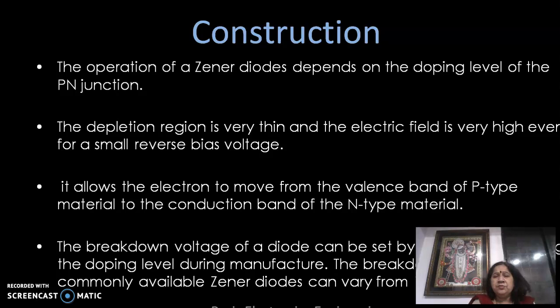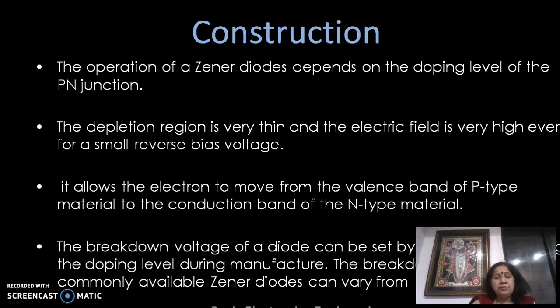The operation of a zener diode depends upon the doping level of the P-N junction. The depletion layer is very thin and the electric field is very high even for a small reverse bias voltage. It allows electrons to move from the valence band of the P-type material to the conduction band of the N-type material. The breakdown voltage of a zener diode can be set by carefully controlling the doping level during manufacture.